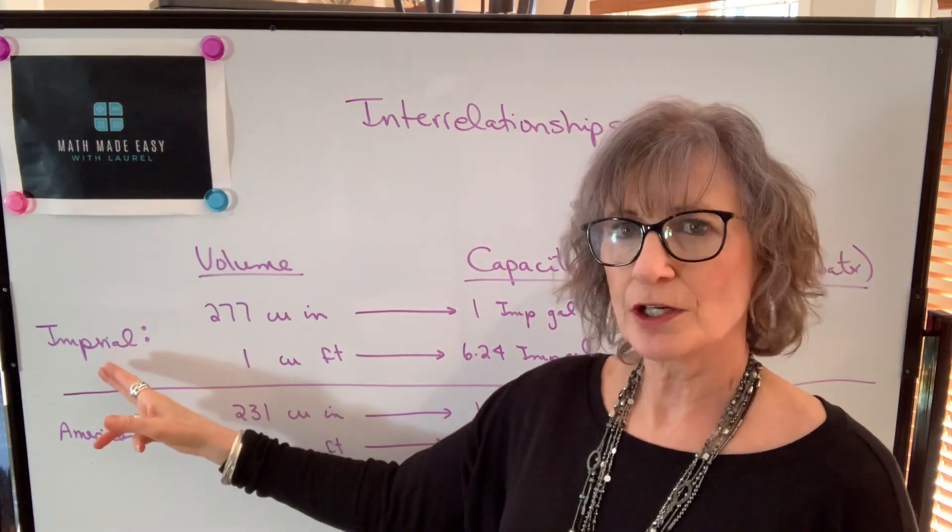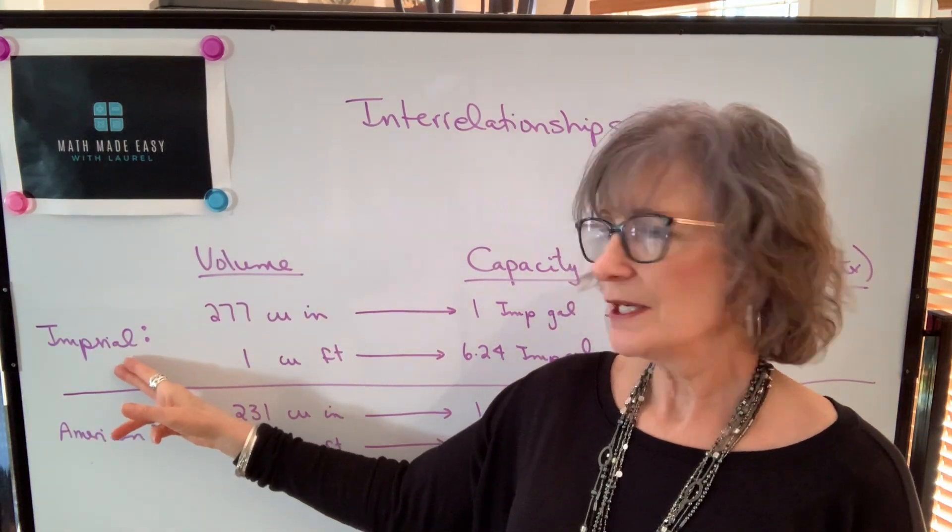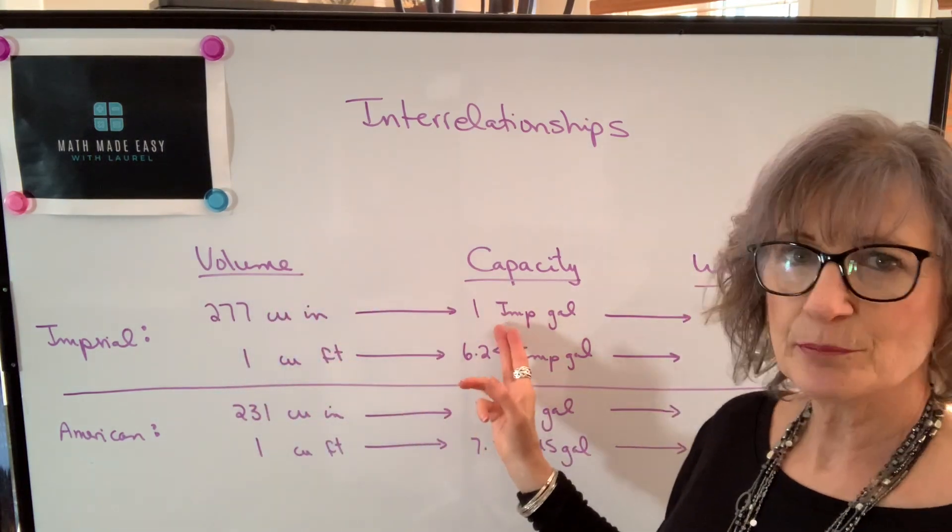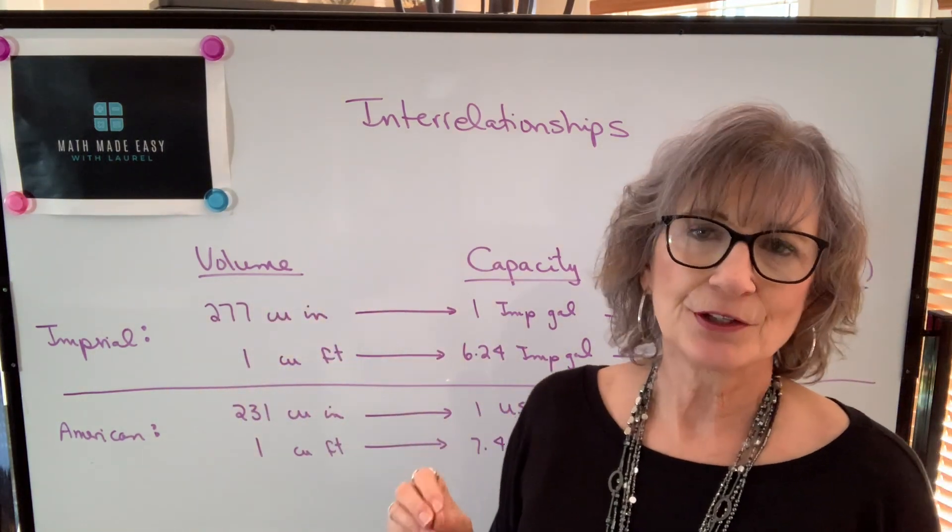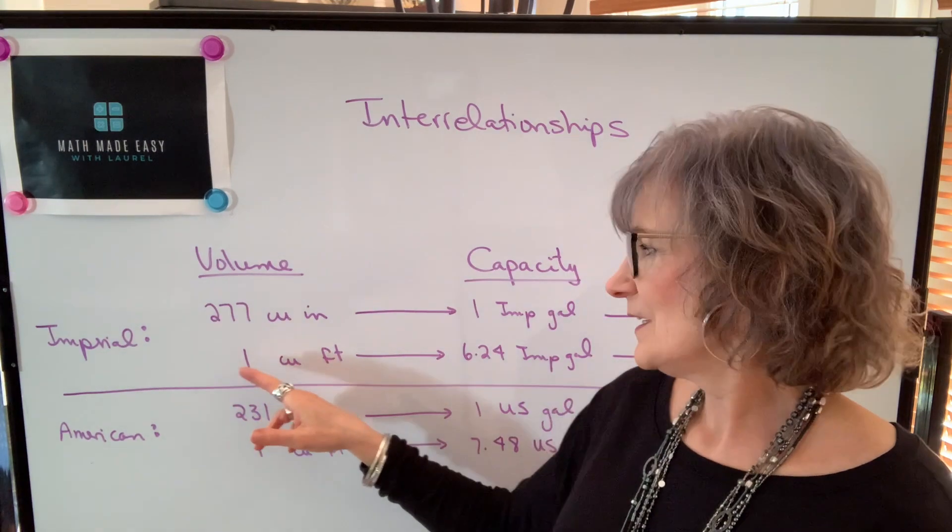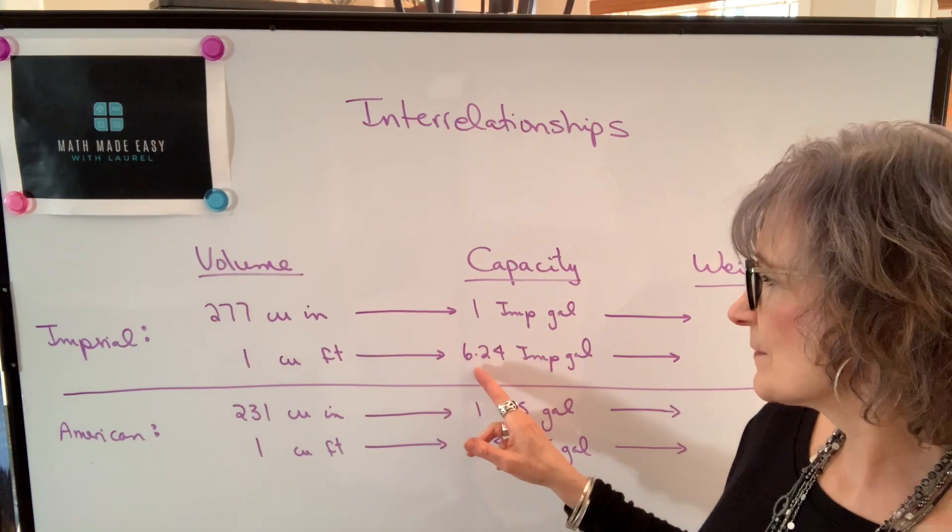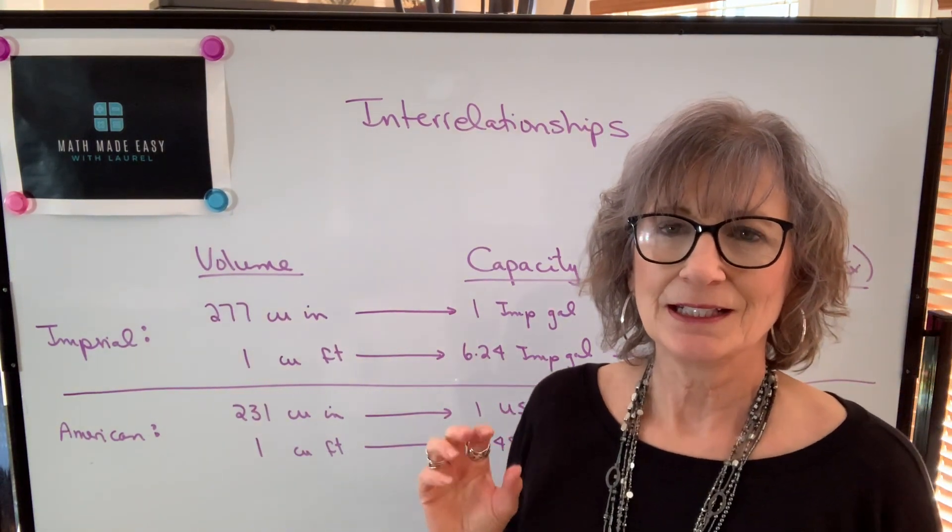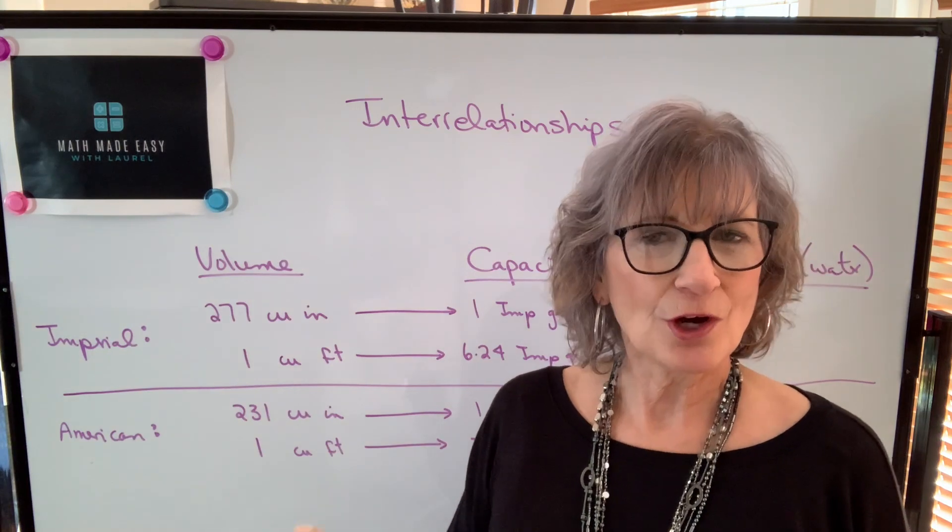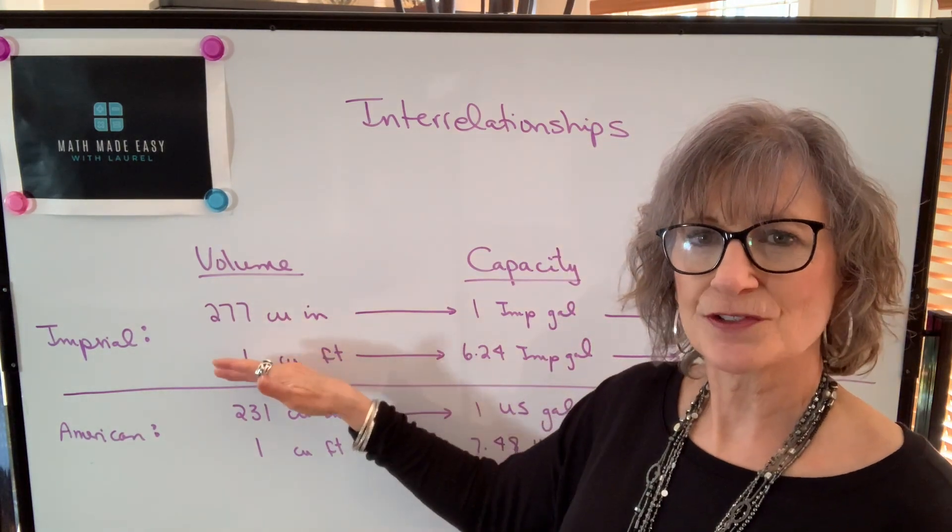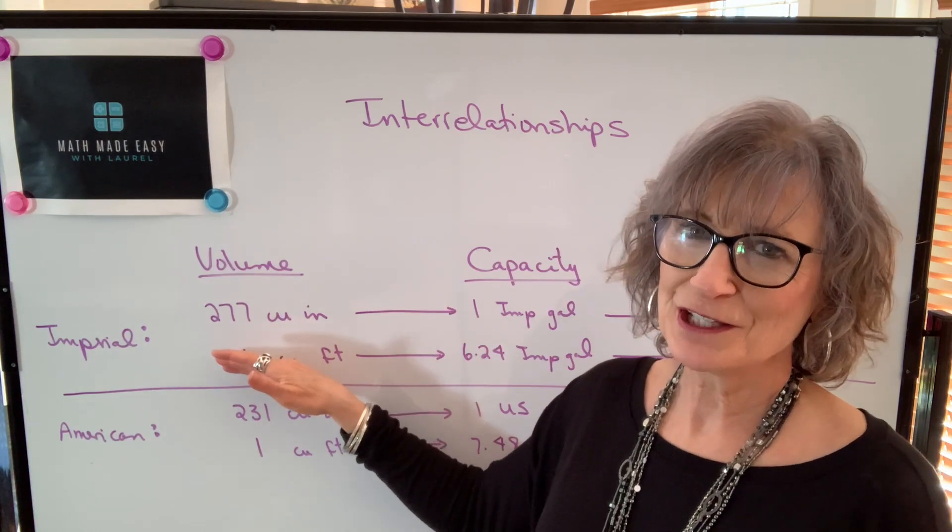To start off with, we'll talk about the Imperial system. There are approximately 277 cubic inches in an Imperial gallon. It's not an exact value, it's just an approximate. If our volume is in cubic feet, one cubic foot will have approximately 6.24 Imperial gallons. It's complicated enough that we're not working with nice numbers and we're working with volumes in cubic inches and cubic feet, but to complicate it even further...